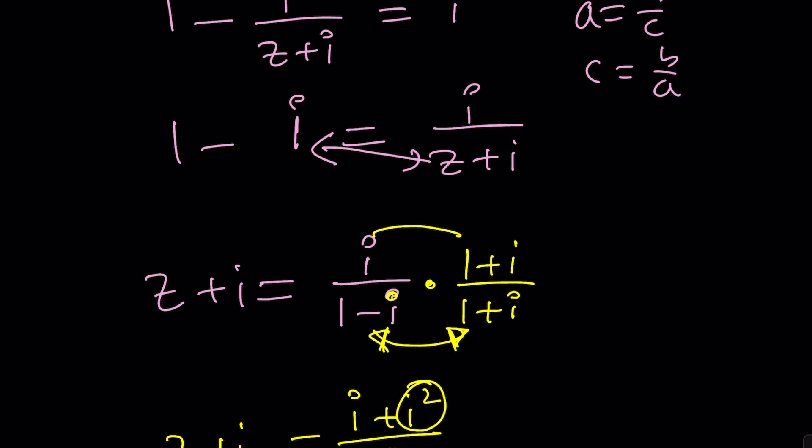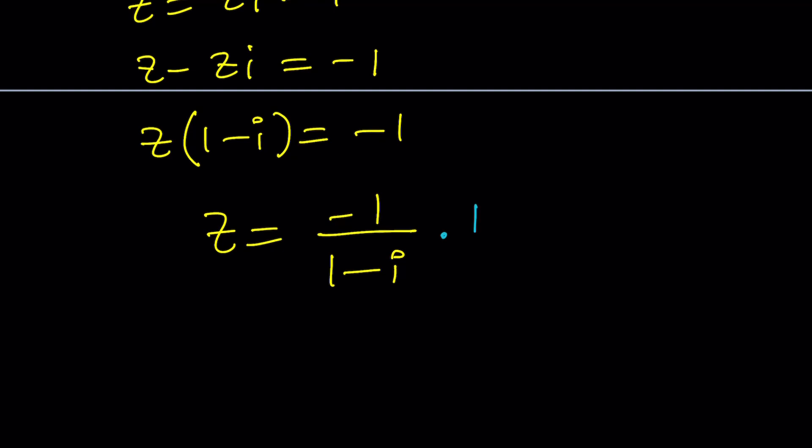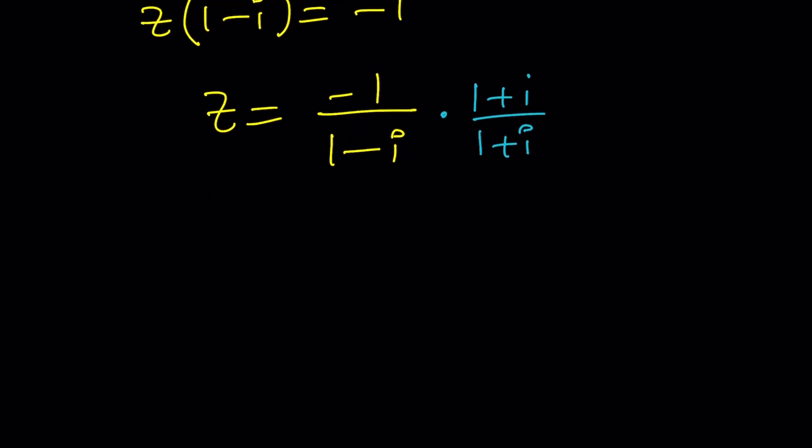Well, pretty close, right? So let's go ahead and multiply by the conjugates again. One plus I, one plus I. And then the numerator is going to be negative one minus I.